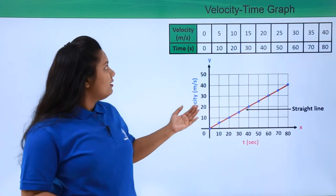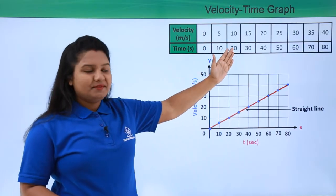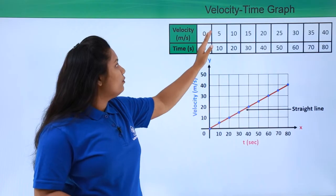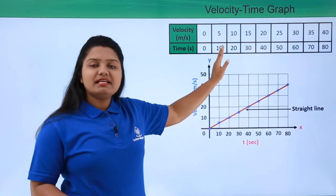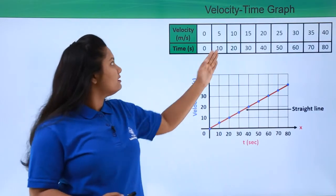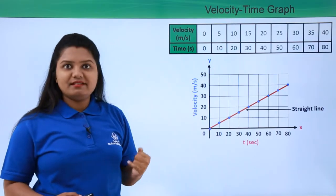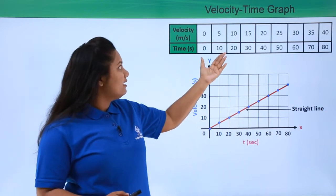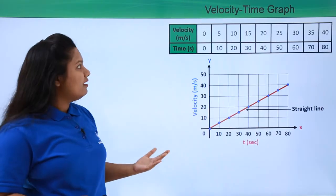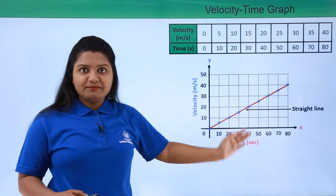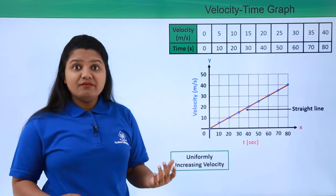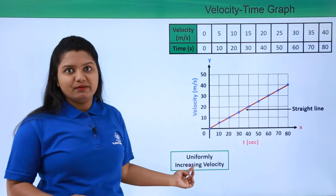Now let us study the velocity of this moving body. When the time was 0 seconds, velocity was 0; when the time became 10 seconds, it was 5 meters per second; when the time was 20 seconds, it was 10 meters per second, and so on. So it is increasing by 5 meters per second every 10 seconds — the body is moving with a uniformly increasing velocity.